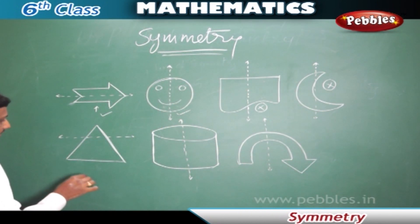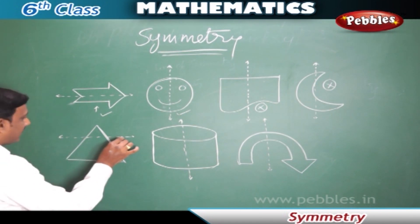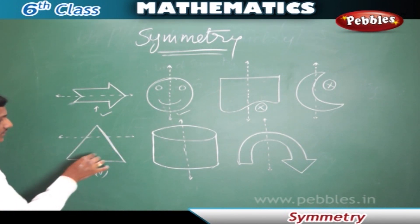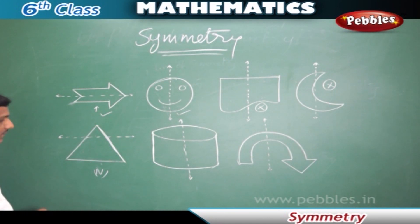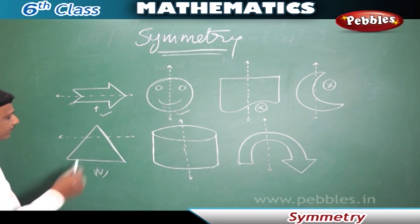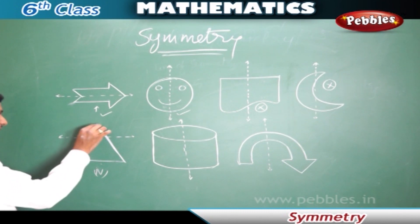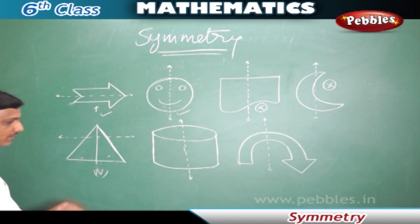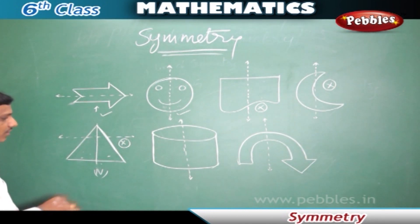Coming to the fifth figure — here is a triangle. This dotted line is dividing the figure into a small triangle and another part which are not matching. If we fold the triangle down, the top part doesn't match with the bottom, so this is not the line of symmetry. However, this figure is symmetric — if a line is drawn this way, this half exactly matches with the other half. So this is a symmetric figure, but this particular dotted line is not the line of symmetry.